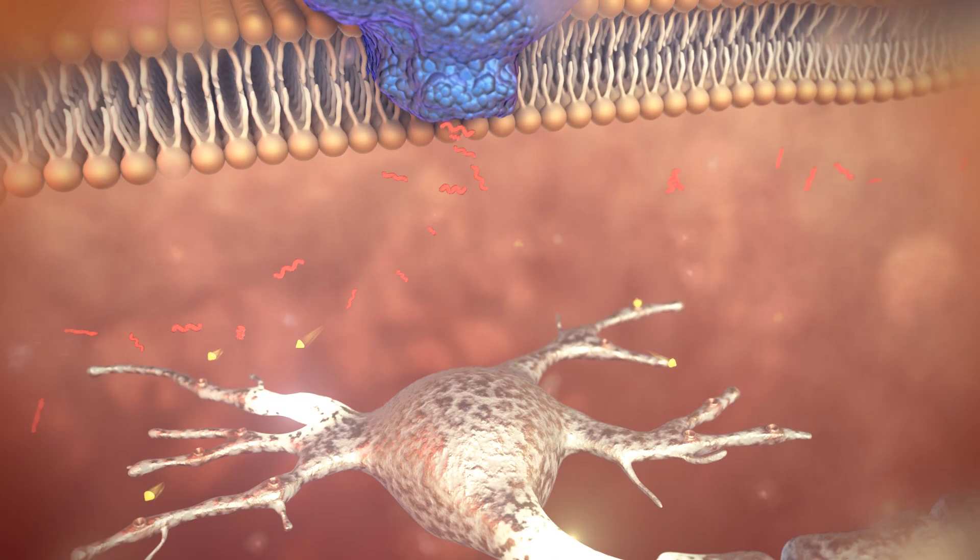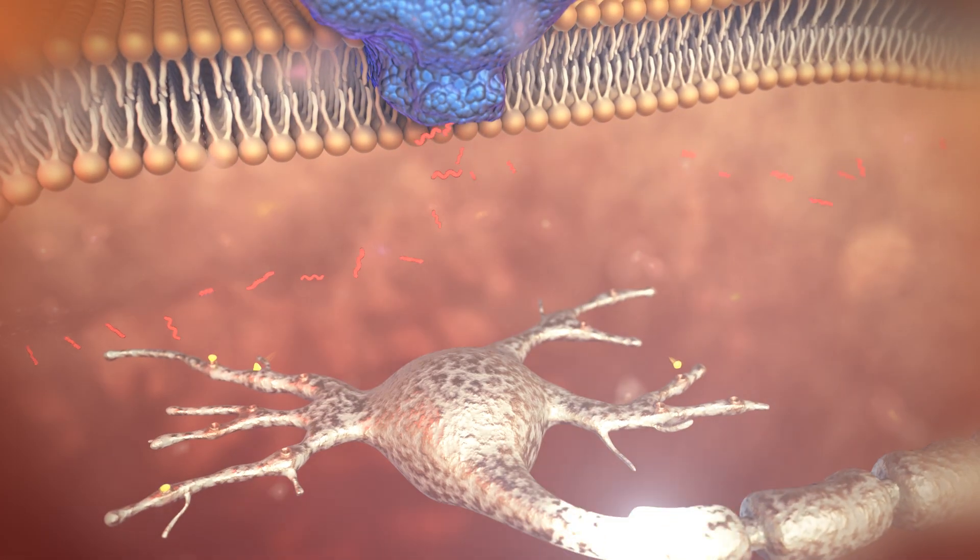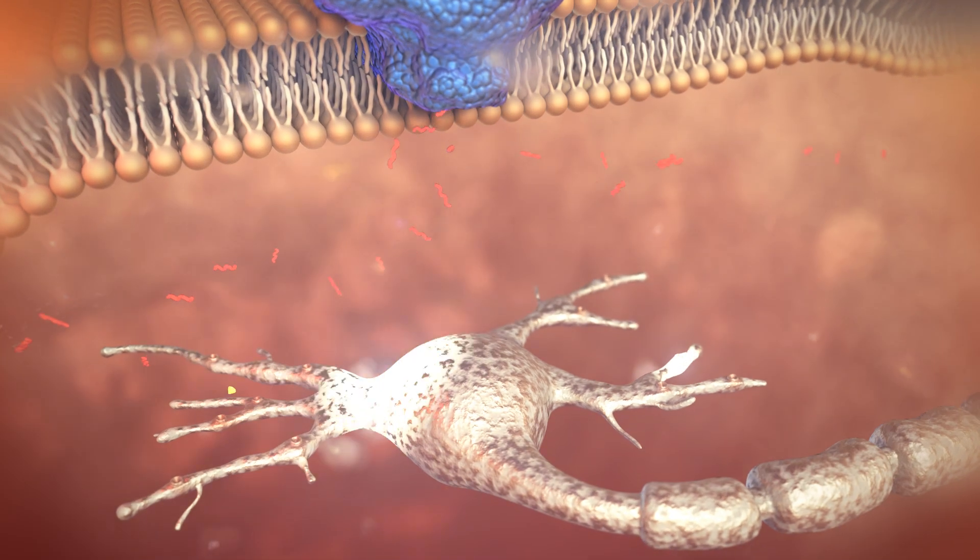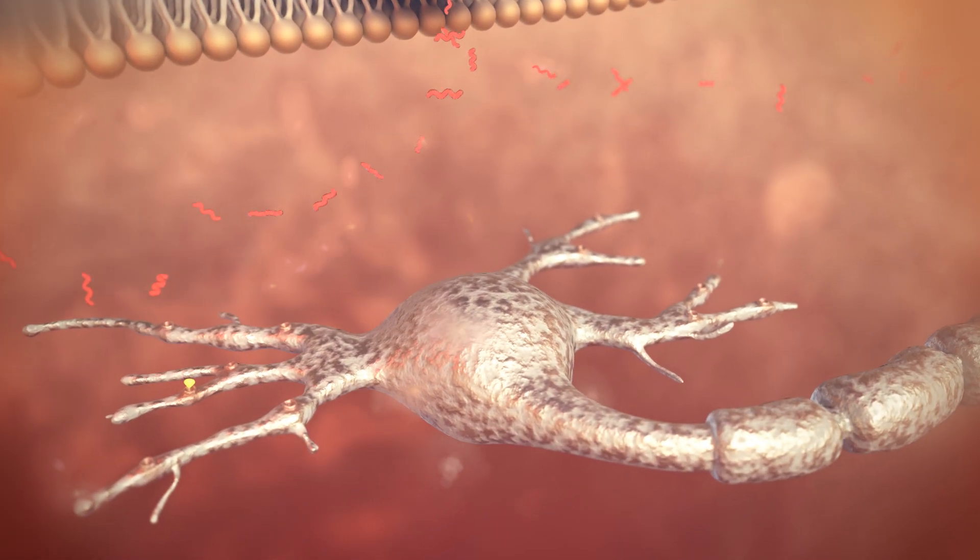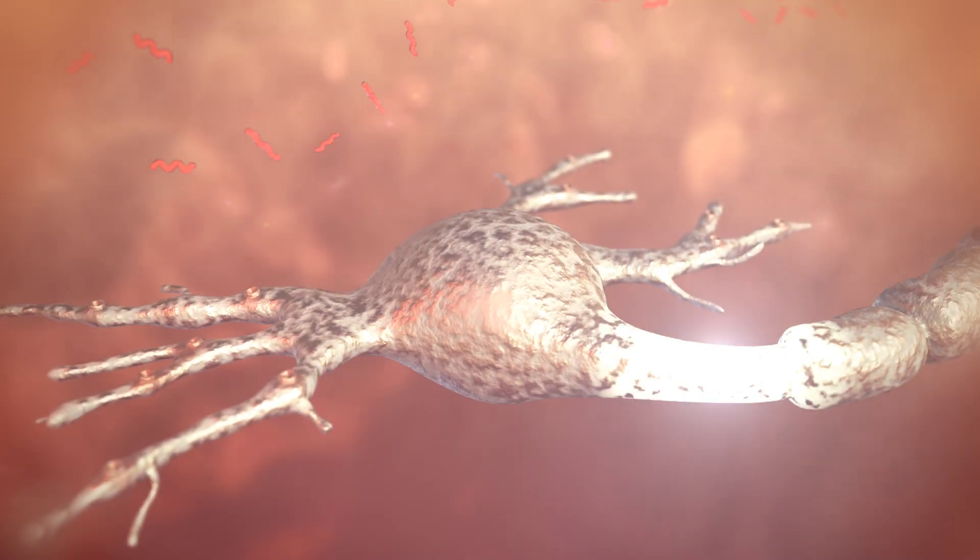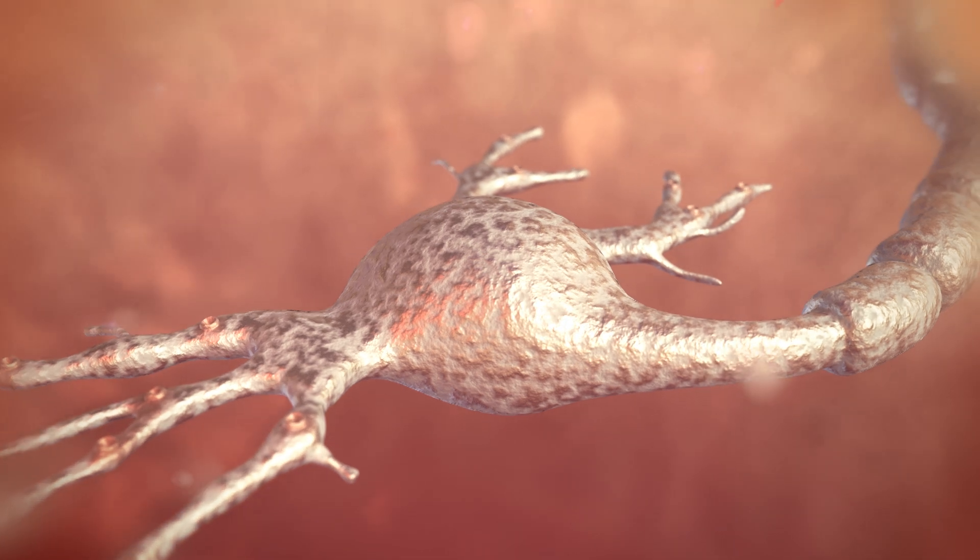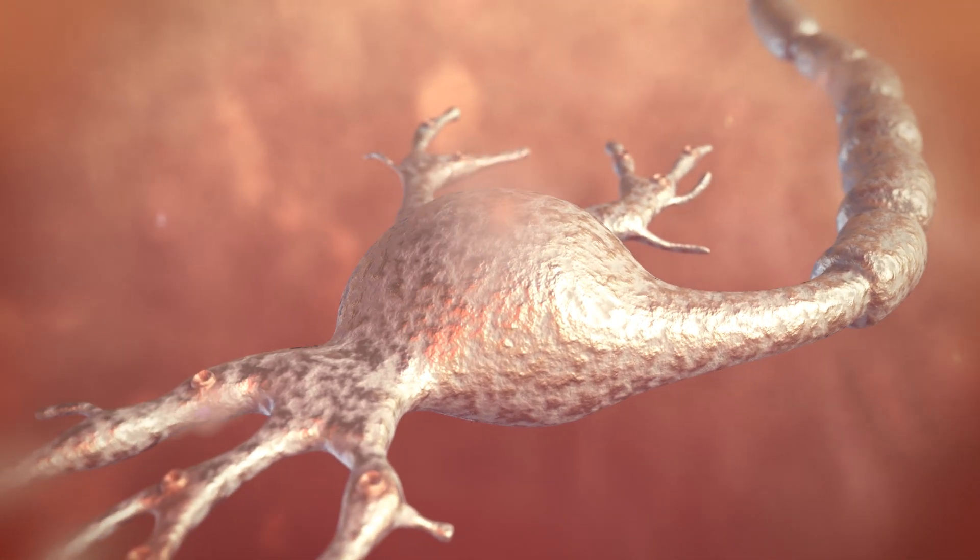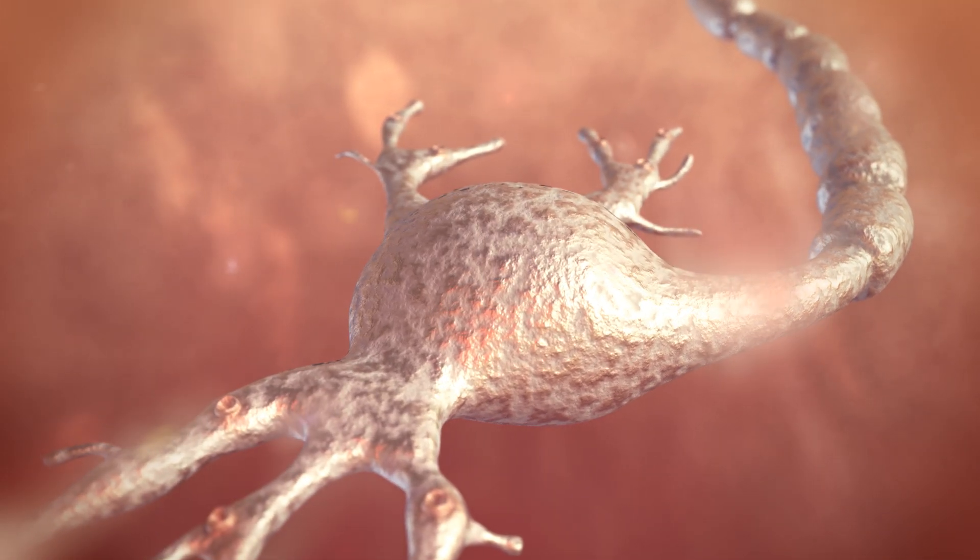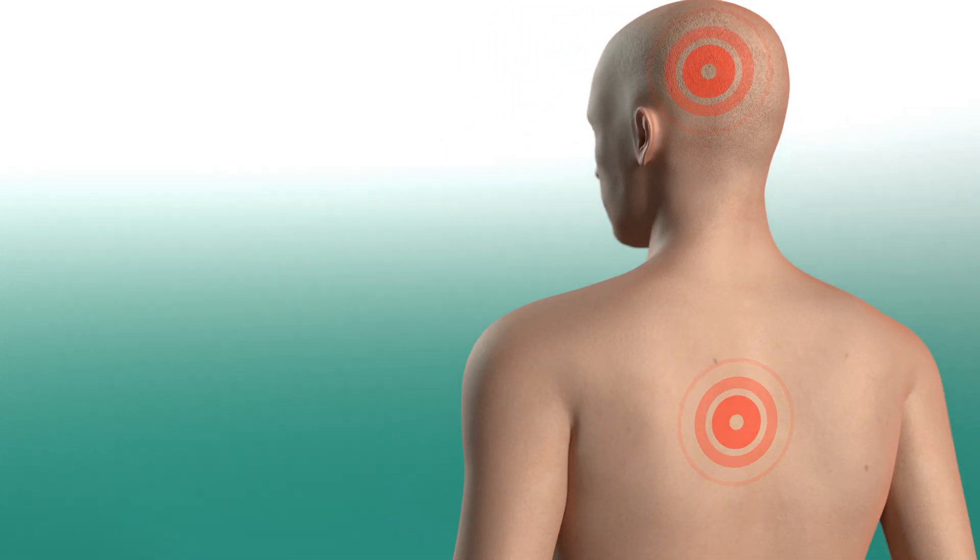Less and less pain messenger substance is transmitted. When fewer and fewer pain messenger substances dock, the nerve endings send correspondingly fewer impulses to the brain. The result, the pain abates, a simple principle with a great effect.